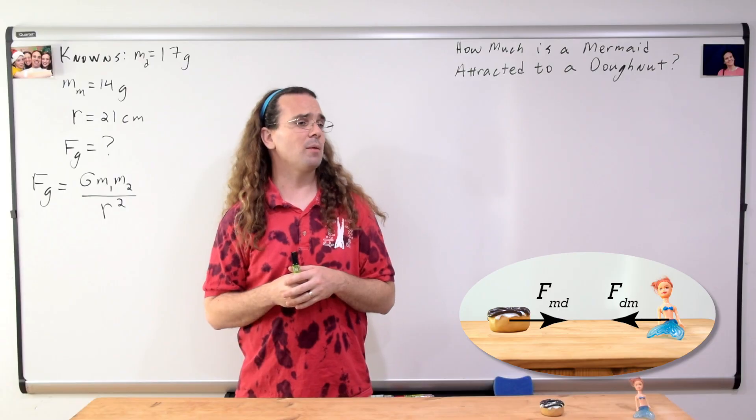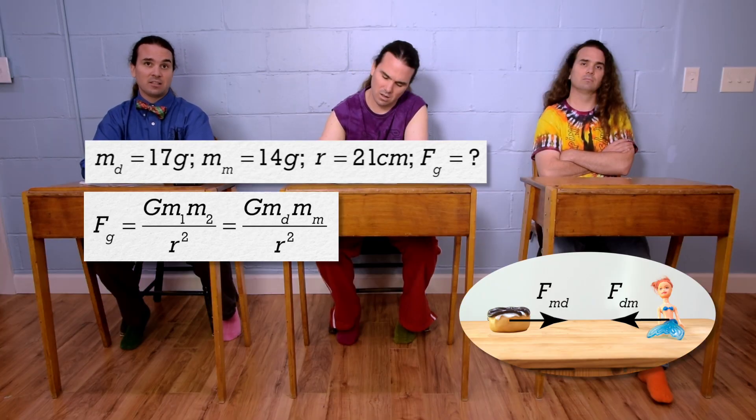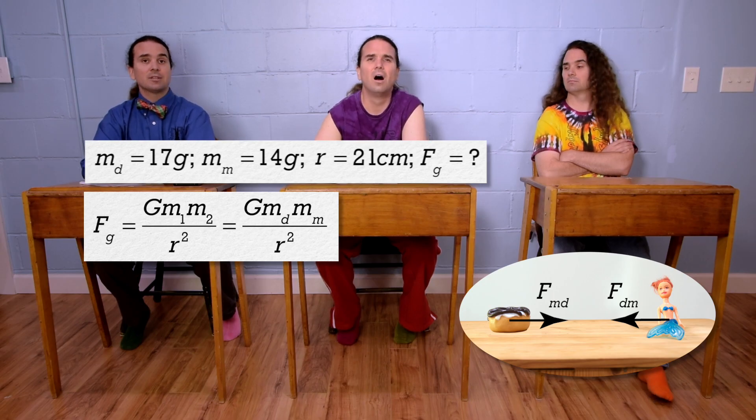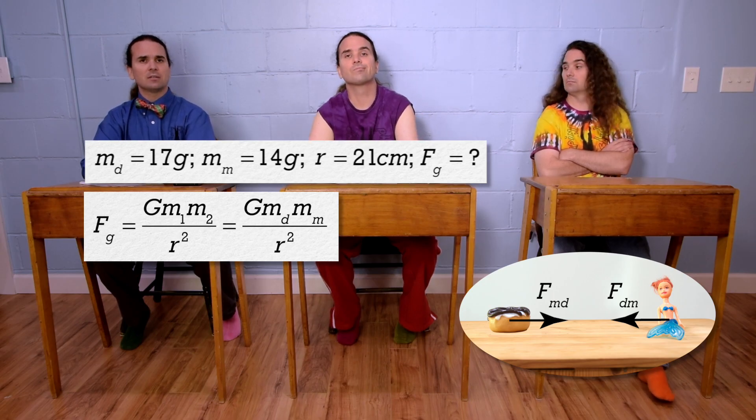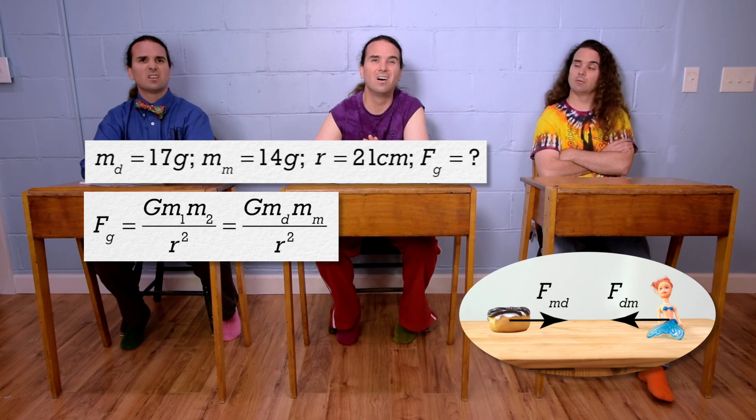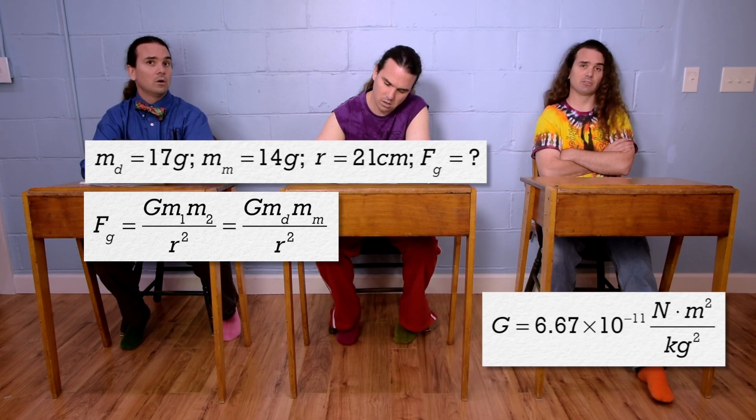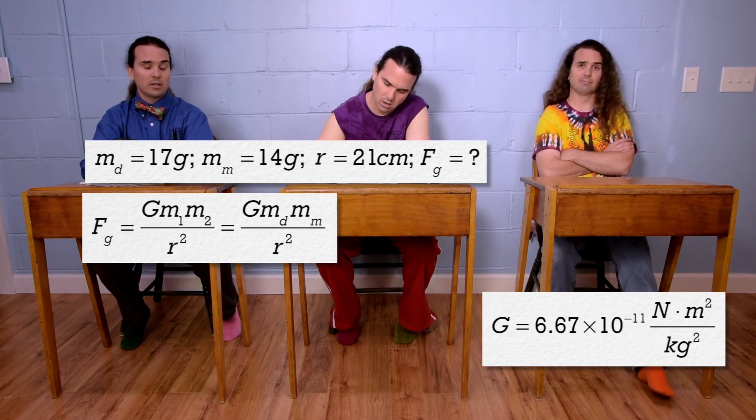Billy, please solve the problem. Sure, we can substitute the mass of the donut and the mass of the mermaid for the two masses in the equation, and then we can plug in numbers. The universal gravitational constant is big G, 6.67 times 10 to the negative 11 newtons times meters squared over kilograms squared. Right, thanks Bo.